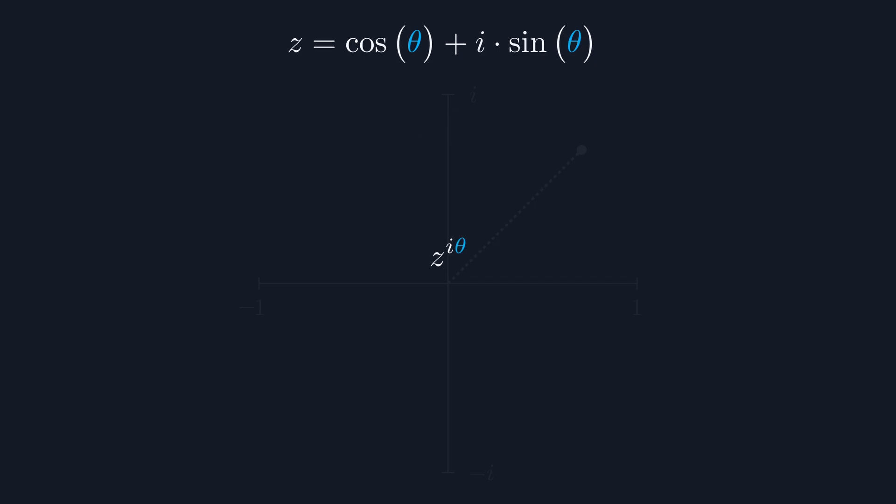This left mathematicians with two questions. First, how do we compute some exponent to the power of i? You can't multiply things together i times. And secondly, what exponent is the one that equals the polar form of the complex number? Let's start with the second question.